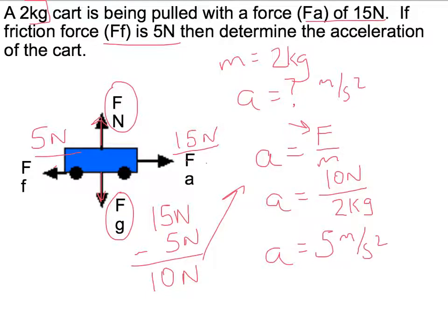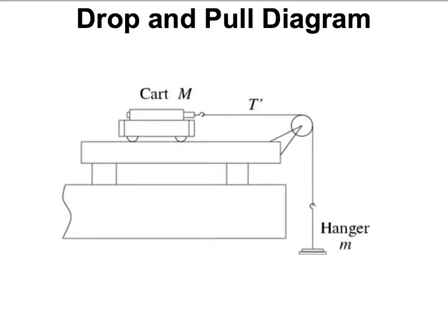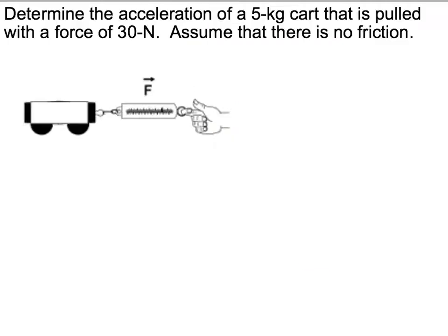You might see a diagram like this and be intimidated at first, but don't be — you got this. We're going to be doing labs using our cart system and our smart pulley, applying a tension force to the cart to get it to accelerate by hanging a mass on a string that goes around a pulley — this is what I mean by a drop and pull diagram. Here's an example: determine the acceleration of a 5 kg cart pulled with a force of 30 newtons, with no friction. The key numbers are that the mass of the cart is 5 kg and the pulling force is 30 newtons.